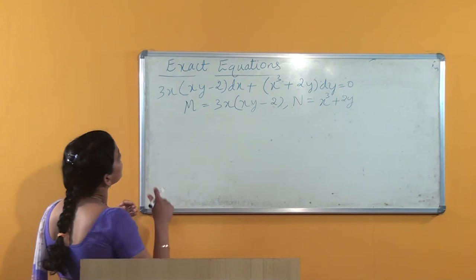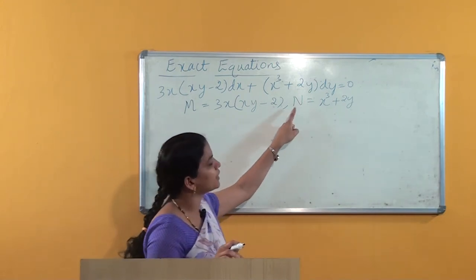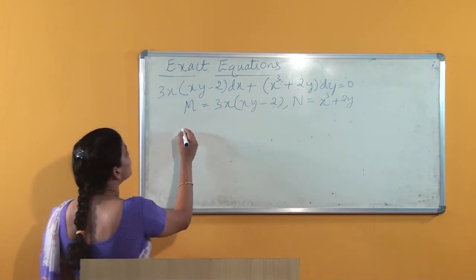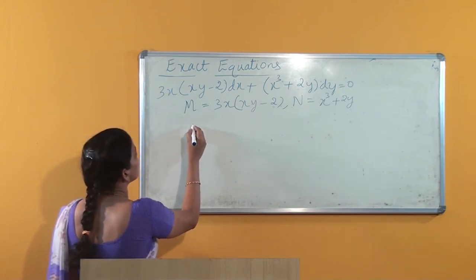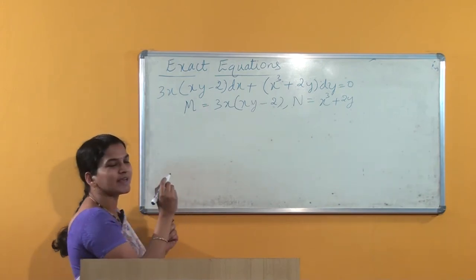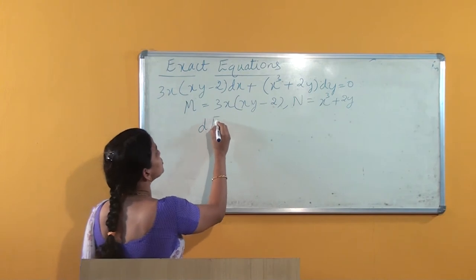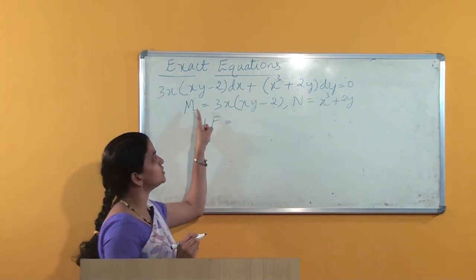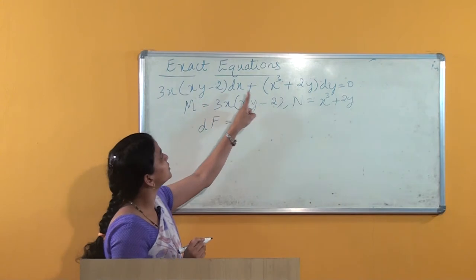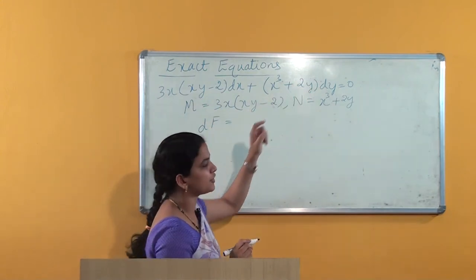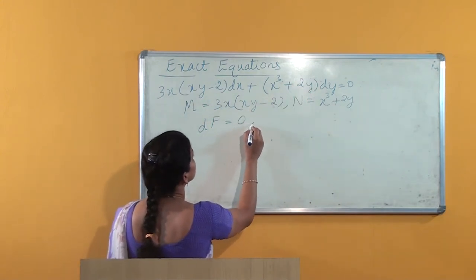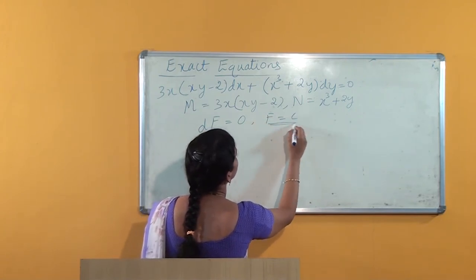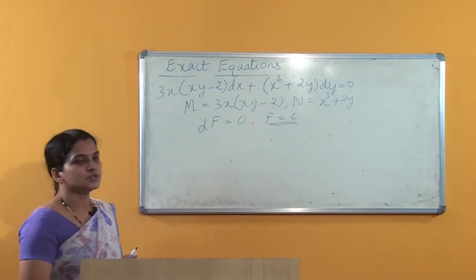So ∂M/∂y = ∂N/∂x, as we already seen. In the previous video we checked that if the given differential equation is exact, then there exists a function f such that the derivative of that function is nothing but the left-hand side of the differential equation. So df = 0, in other words f = c will be the required solution.